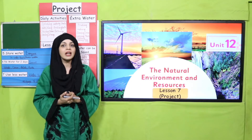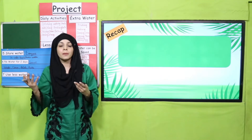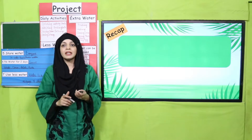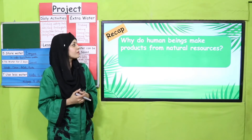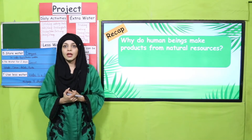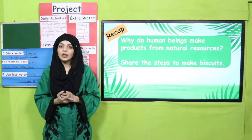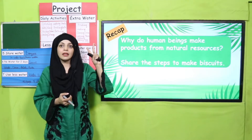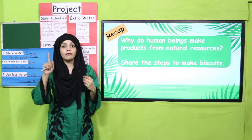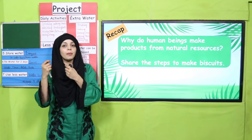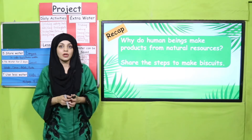Before moving on towards your project, let's quickly recap what we did in lesson number six. We discussed how biscuits are made and how different man-made materials are made from natural resources. Quickly answer: why do human beings make products from natural resources? To fulfill our needs. Share the steps to make biscuits: the farmers sow the seeds, the crops grow, they cut them, take them to factories and mills where they are ground into flour, then taken to bakeries to make biscuits.